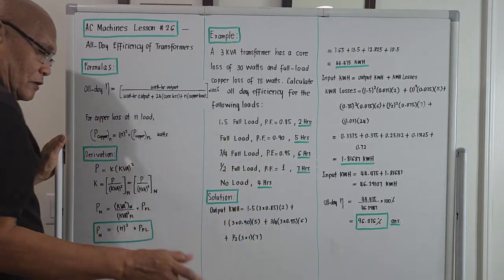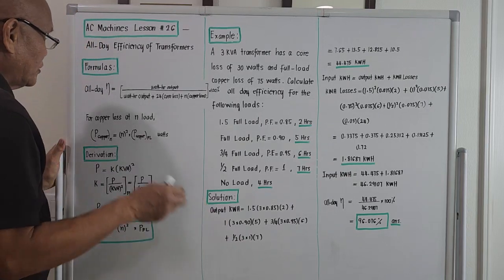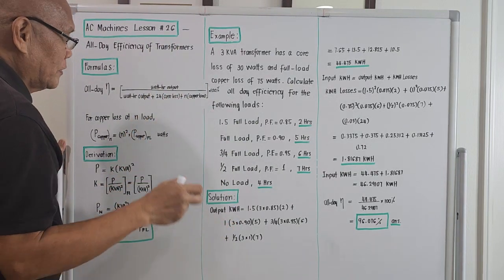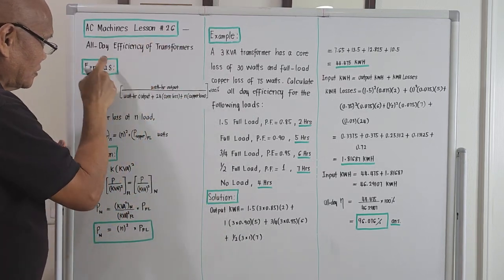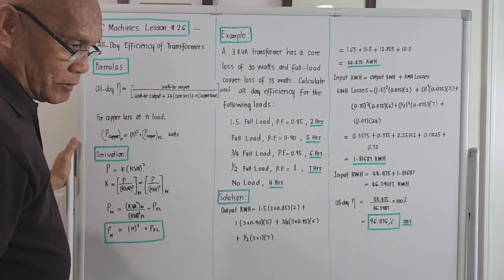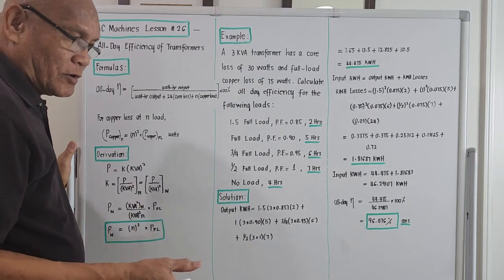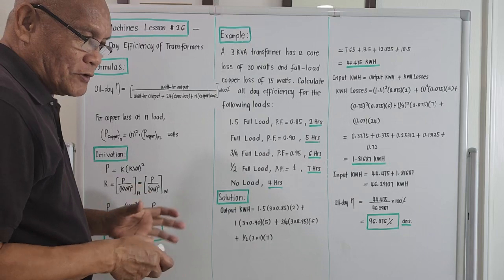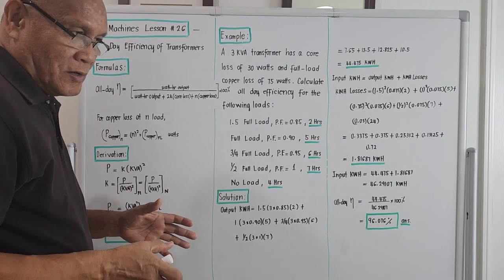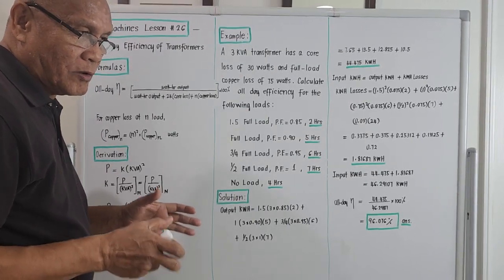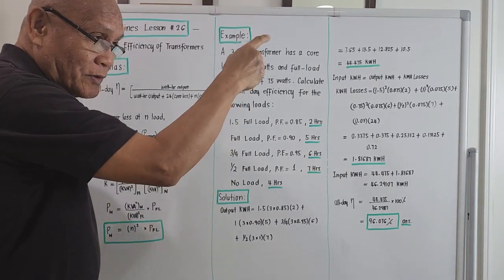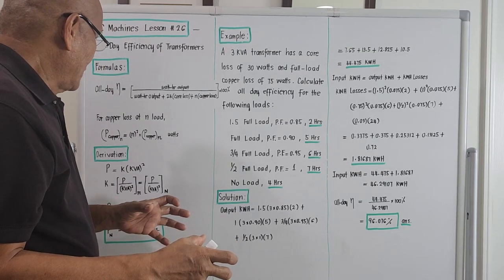The subject matter for this session is a long-video-format discussion on the study of AC machines. We are now on Lesson 26. The title is the all-day efficiency of transformers. All-day efficiency is very important for utility companies because they want to ensure they can deliver power efficiently to households or business entities. They must know how to compute the all-day efficiency for distribution transformers — the transformers hanging on poles to which our service entrances are connected.